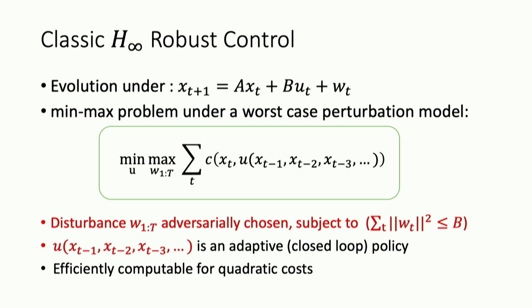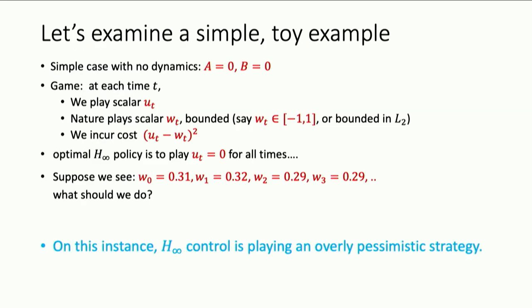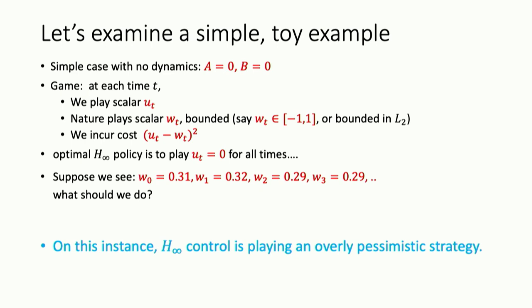Before we motivate a different notion of robustness, let's examine this notion in a very concrete setting. Consider a very simplistic example where there are no dynamics at all — x is a scalar, u is a scalar, A is 0, and B is 0. It's basically a game: at time t we choose some real number u_t, then nature chooses some scalar w_t, the disturbance, where w_t is bounded between minus 1 and 1. We incur the cost, which is the squared difference between these two.